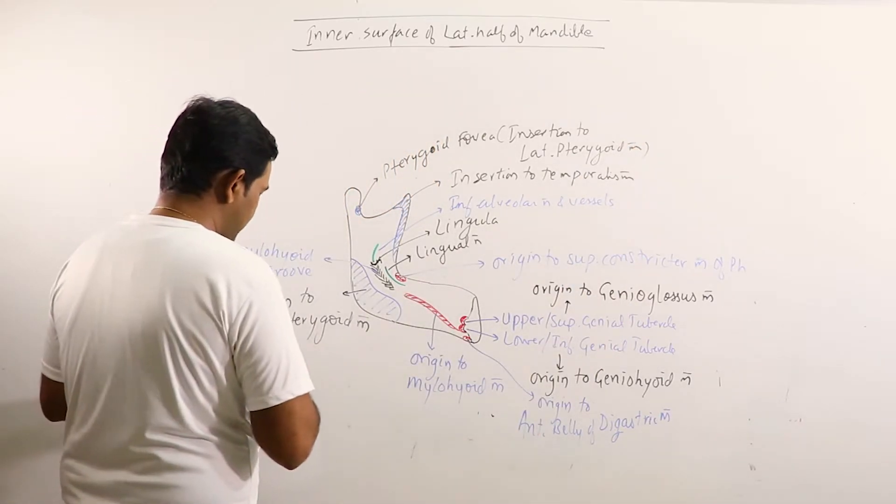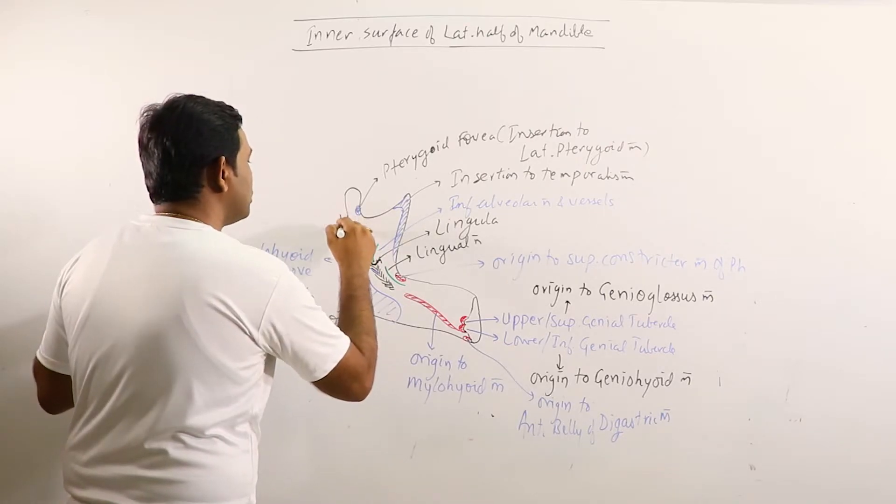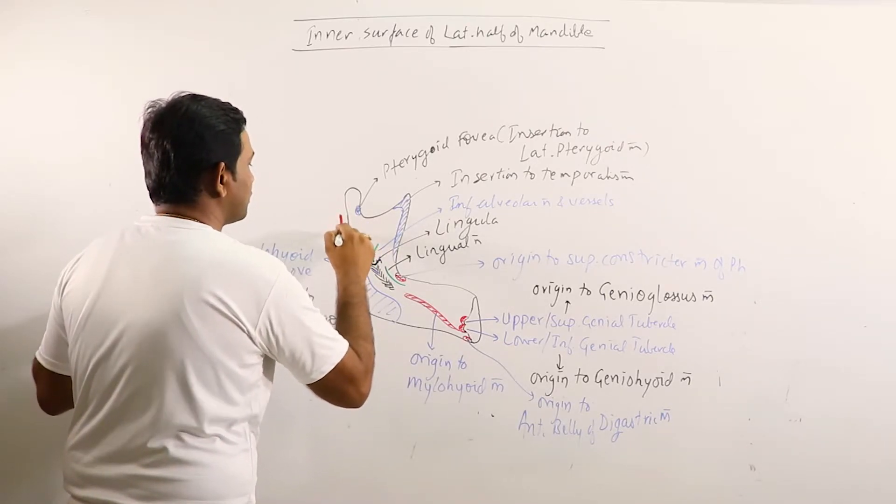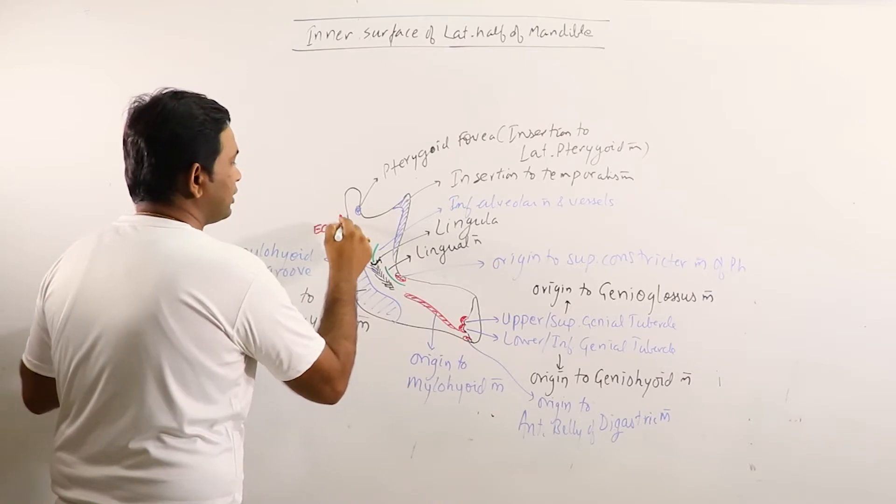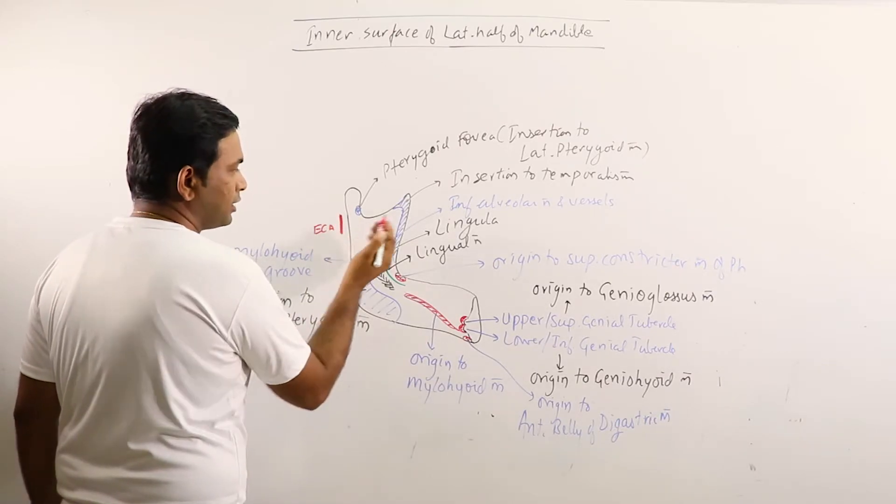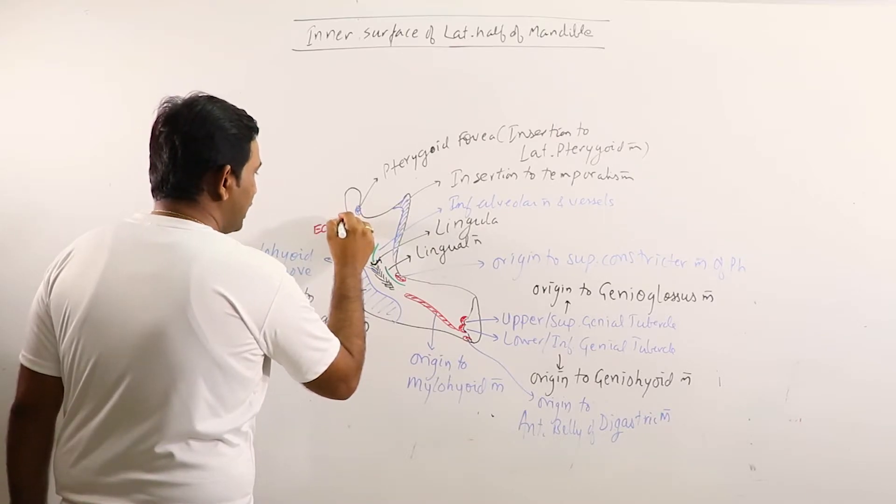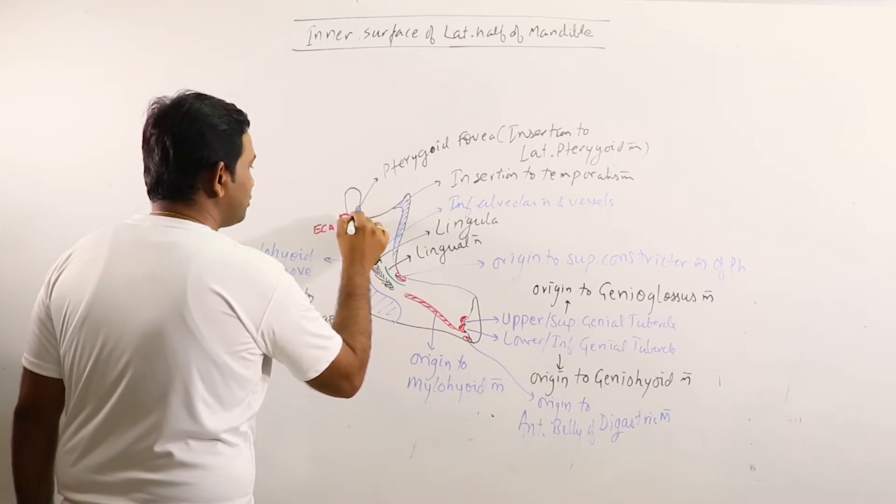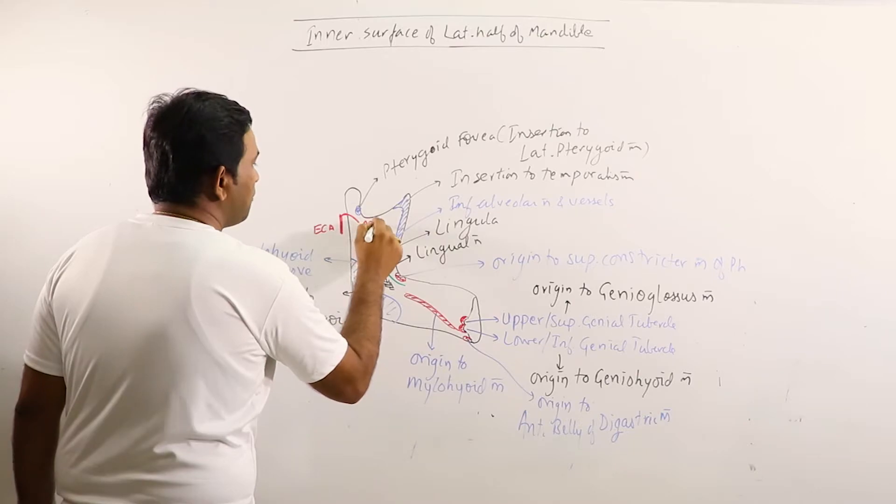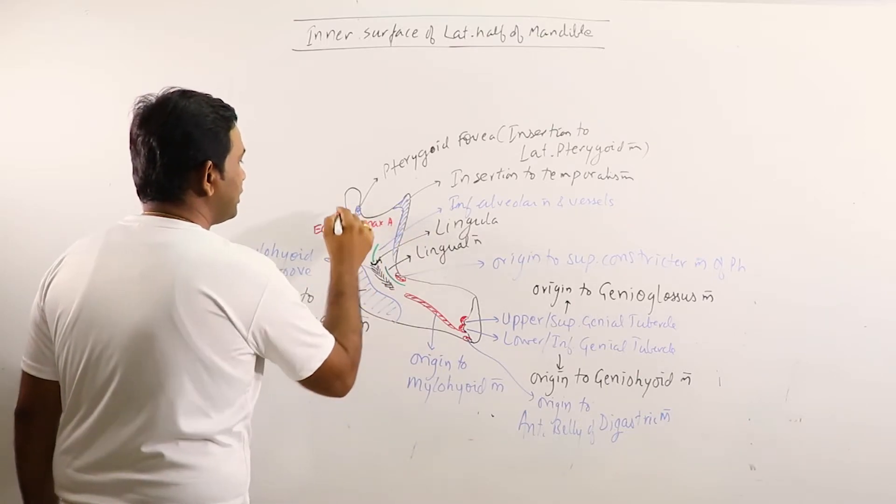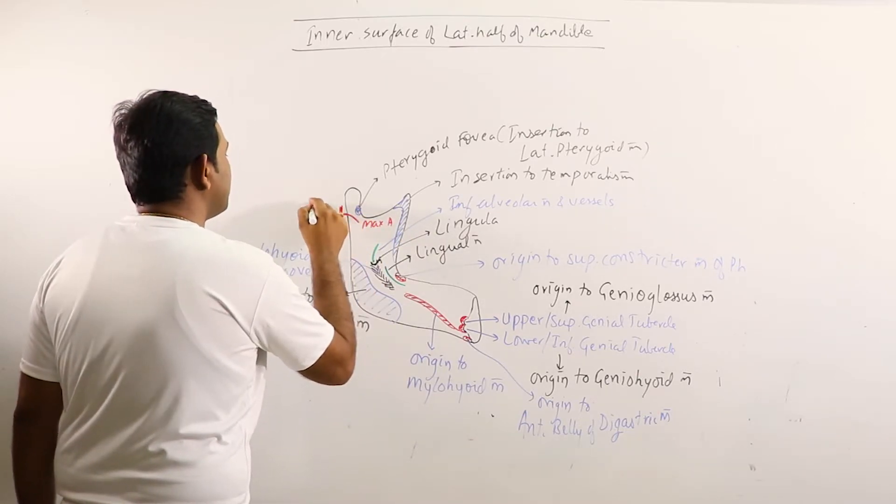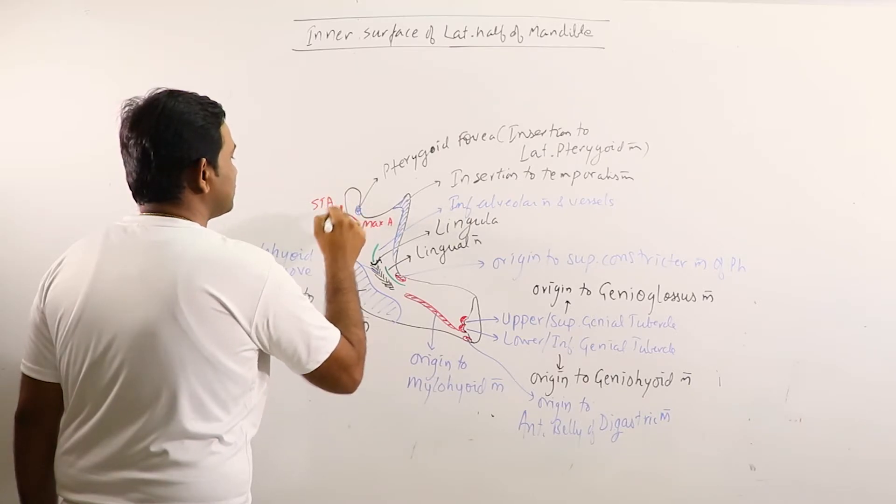In addition we can also observe the external carotid artery somewhere here, that is just behind the mandible, and it branches off to give maxillary artery anteriorly and superficial temporal artery upwardly.